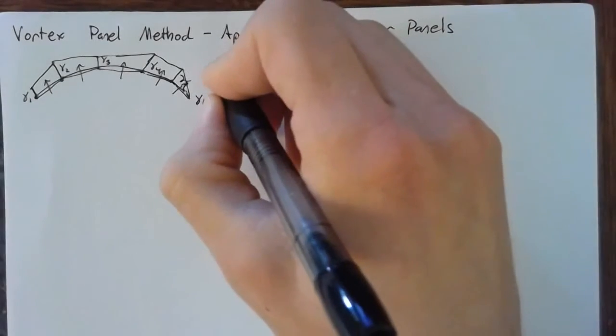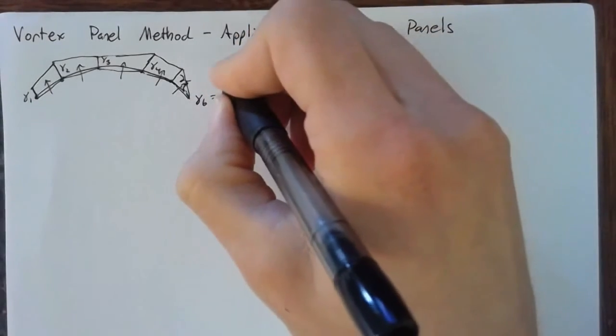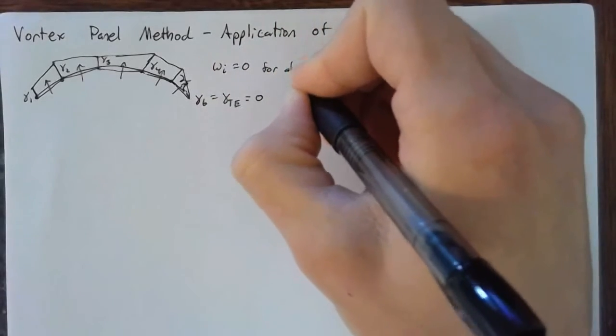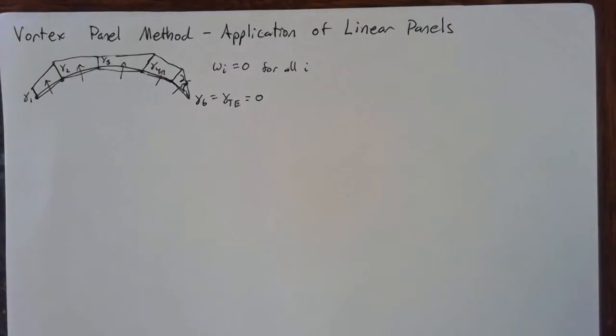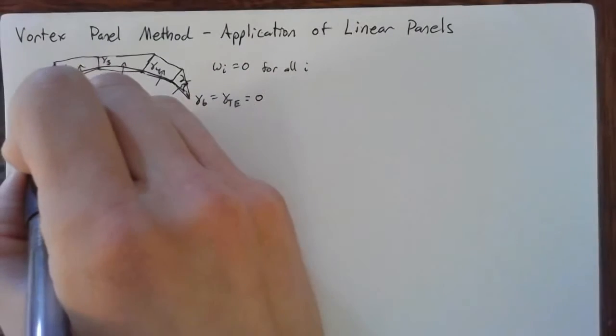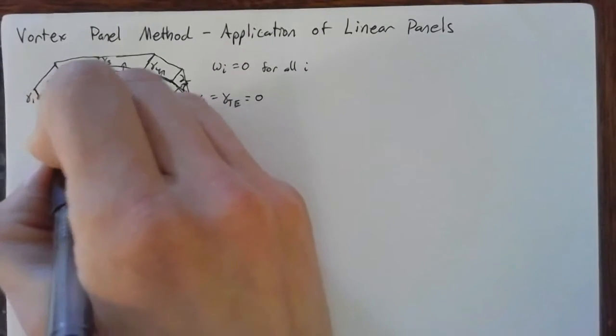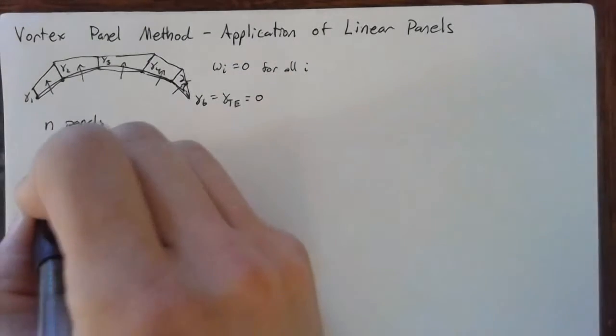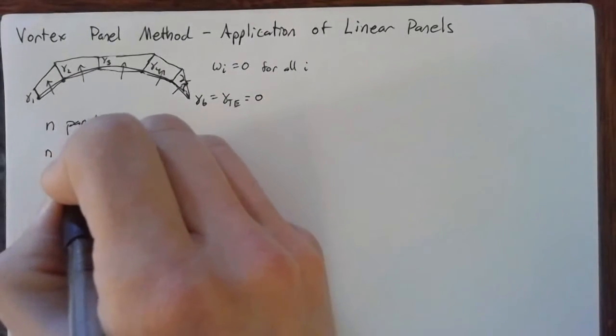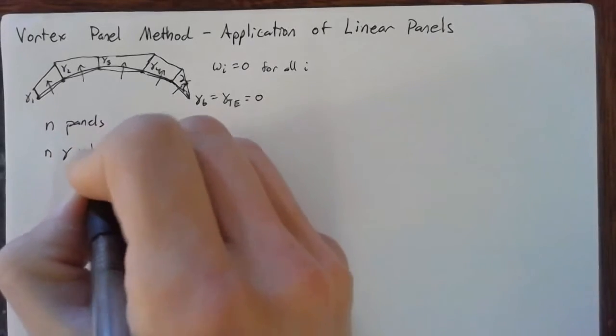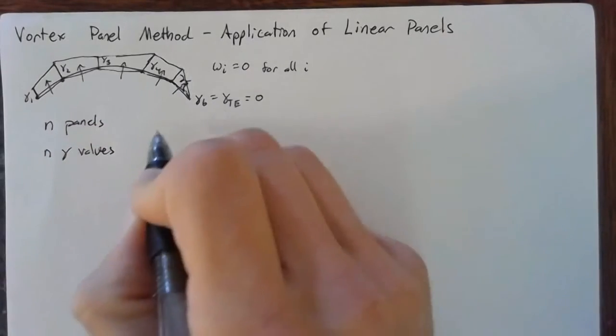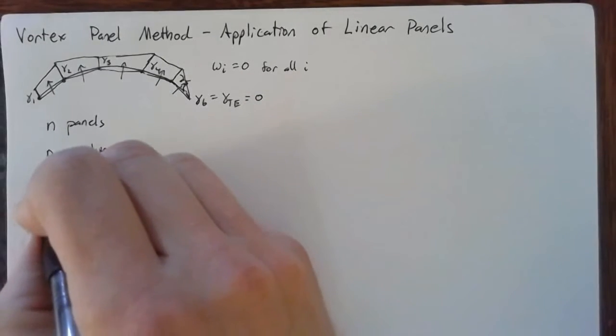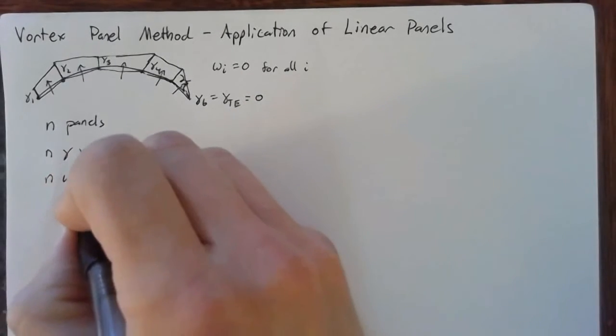We're also saying that the upwash of each panel is equal to 0. So we can say this for all i. So what does this mean? If we have n panels, this means that we will have n gamma values, ignoring the one on the end here. So we have five panels, we'll have five gamma values, and we'll have n w values.